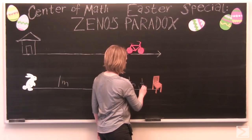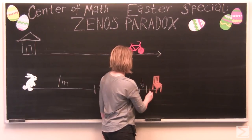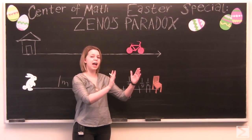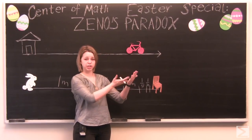And then an eighth of a meter. And we'll do one more one sixteenth of a meter. If he's traveling an infinite amount of halves, will he ever reach the chair?